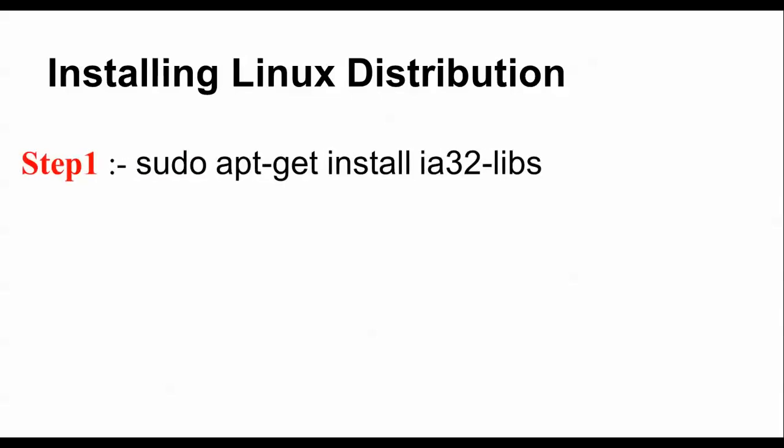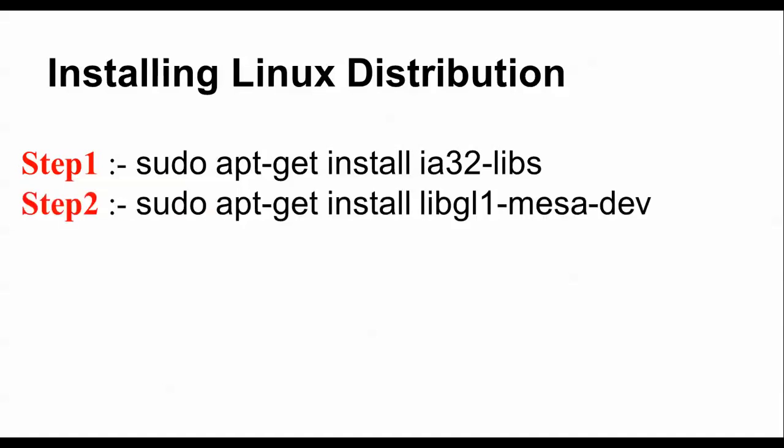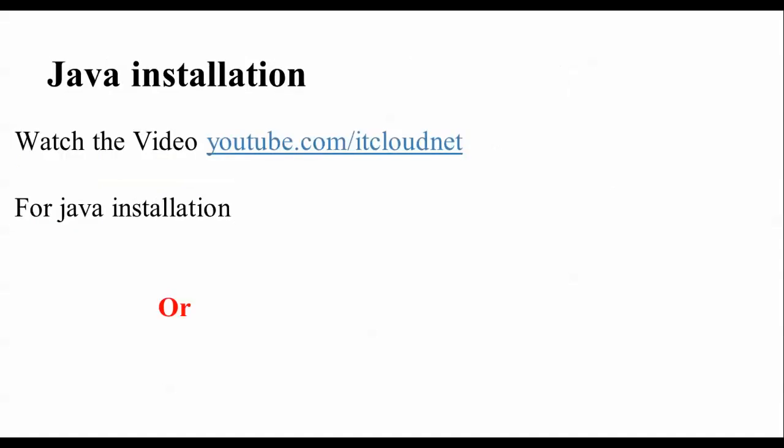The first dependency command is for ia32-libs to install in Ubuntu. If it is already installed, the second step command will be used in place of ia32-libs.